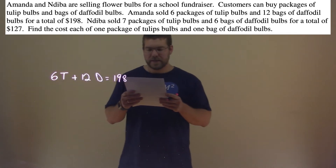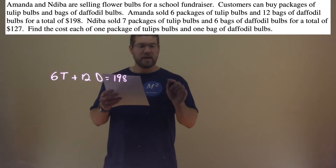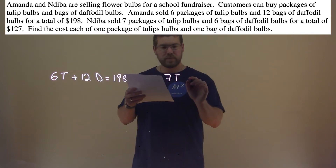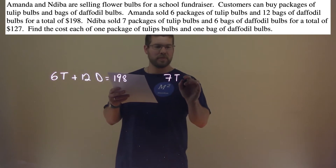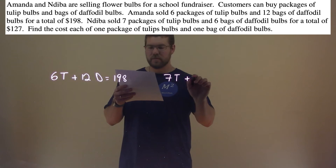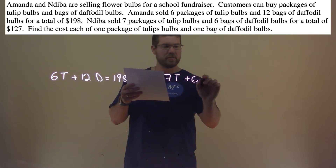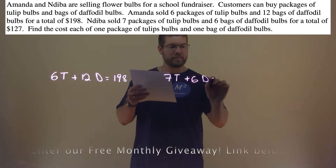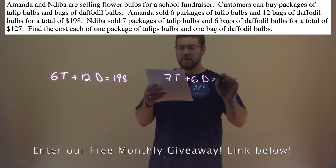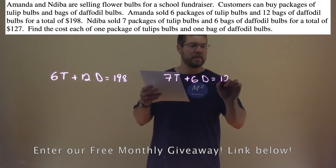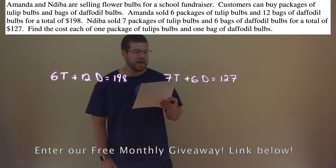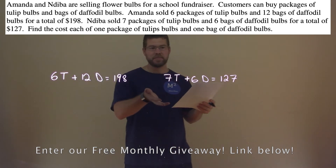They also sold 7 tulip bulbs — a package of tulip bulbs, we don't know the prices — plus 6 daffodil ones. And that equals $127. So now we have our system of equations here.